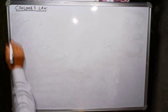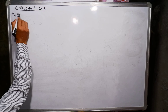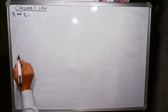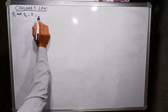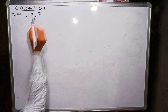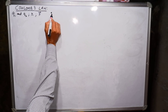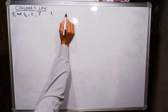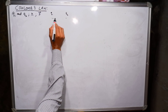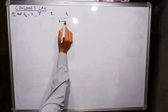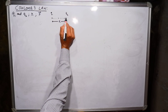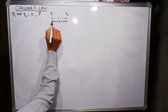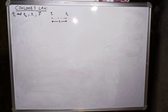Let us consider two point charges given by q1 and q2, and let the distance between their centers be R, and the electrostatic force be F. We place q1 here and q2 here, so the distance between the centers of q1 and q2 is R.